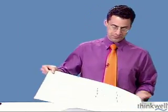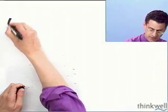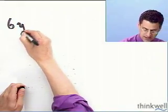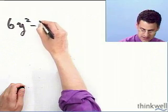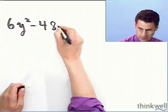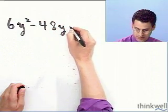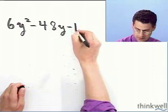Okay, let's try another example together and practice a couple more of these. So let's consider the following: 6y² - 48y - 120.